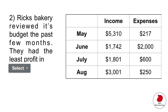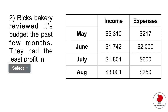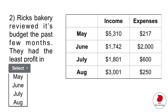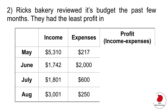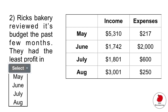The next question is a drop-down menu problem. They give you a little drop-down, you click on it and it gives you the answer options. It says Rick's bakery reviewed its budget the past few months and they had the least profit in which month. You calculate the profit each month by subtracting expenses from income. Looking at June, they actually lost money because their expenses were higher than their income, so the least profit was in June.